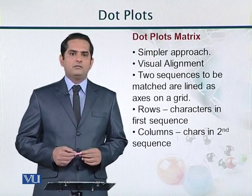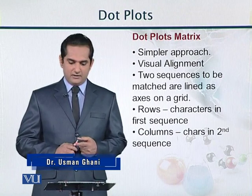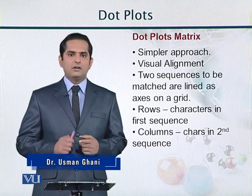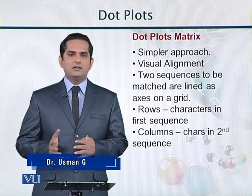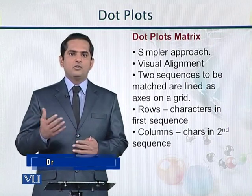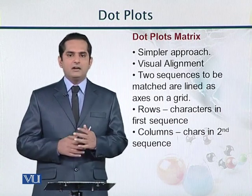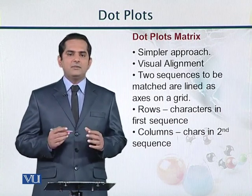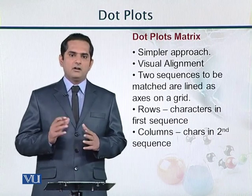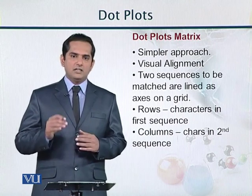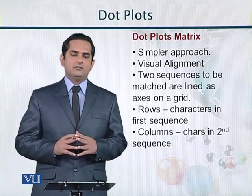The dot plot matrix approach is a very simple approach — simple because it can be seen visually. This is a visual alignment technique which we can observe in a graph. The idea is that two sequences are put inside a graph: one sequence is placed along the x-axis and the other along the y-axis.